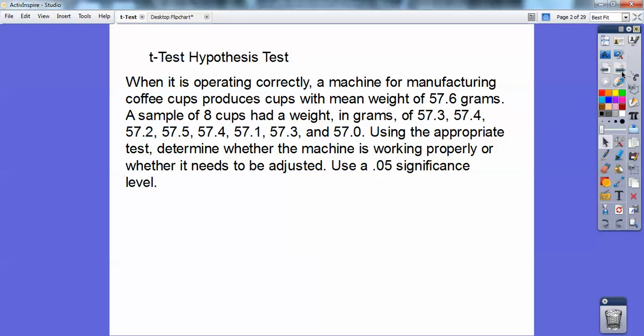When it's operating correctly, a machine for manufacturing coffee cups produces cups with a mean weight of 57.6 grams. A sample of 8 cups had a weight in grams of 57.3, 57.4, 57.2, 57.5, 57.4, 57.1, 57.3, and 57.0. Get your calculators out and go ahead and punch those in your list one.